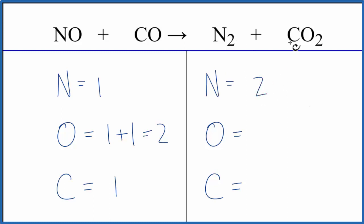On the product side, two nitrogens, two oxygens, and one carbon. Let's see. It looks like the nitrogens, really, that's what we need to balance,